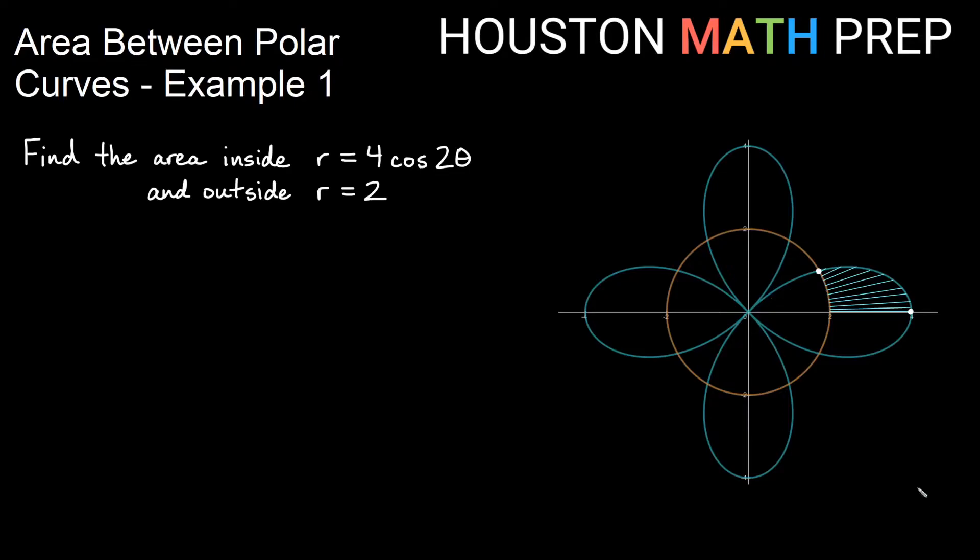Once I have this area here then I can go ahead and take this and multiply by 8 and get all of the area outside of the circle that's inside of these petals. Let's go ahead and set this up. So my area is going to be 8 times my formula one half integral from alpha to beta and I'll figure those out in a second. So this is my alpha here, this is my beta over here. Now what I'll need to do is take the outer function squared minus the inner function squared.